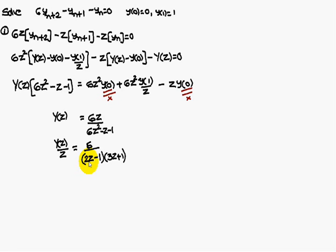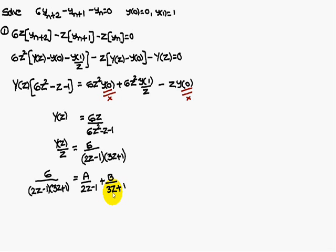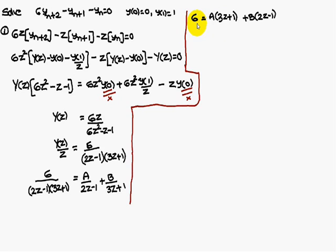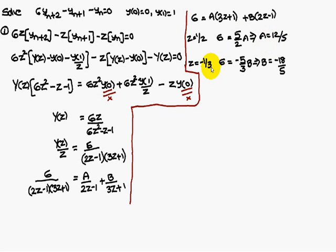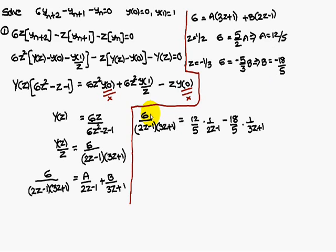The denominator 6Z² minus Z minus 1 can be written as (2Z minus 1)(3Z plus 1). So 6 by [(2Z minus 1)(3Z plus 1)] can be written as A/(2Z minus 1) plus B/(3Z plus 1). Simplifying with LCM: setting Z equal to 1/2, A equals 12/5. Setting Z equal to minus 1/3, B equals minus 18/5. Therefore 6/[(2Z minus 1)(3Z plus 1)] equals (12/5)/(2Z minus 1) plus (minus 18/5)/(3Z plus 1).